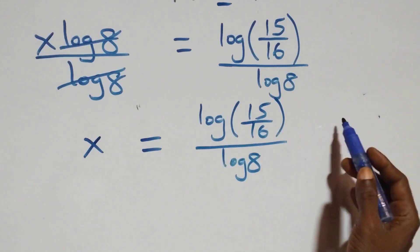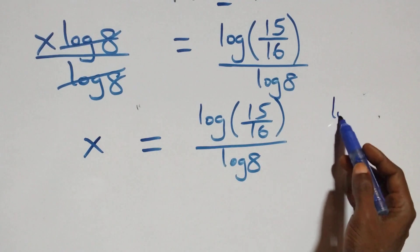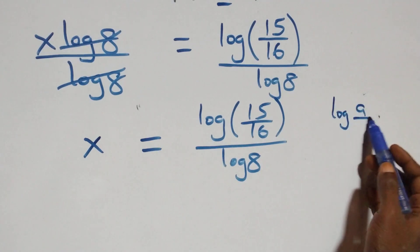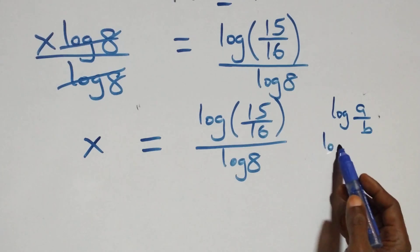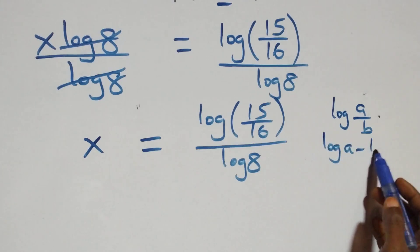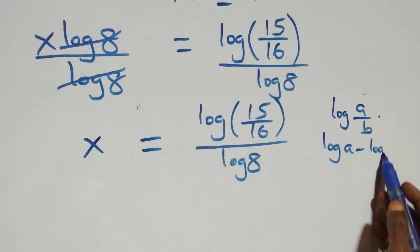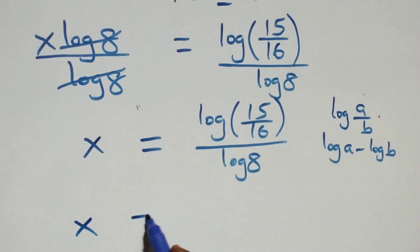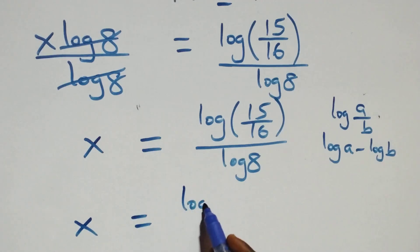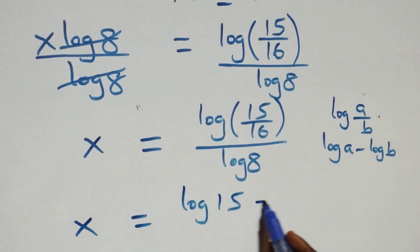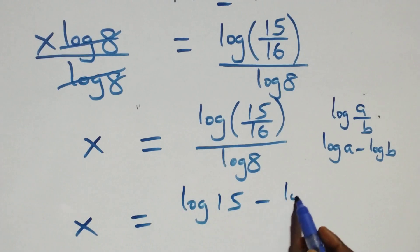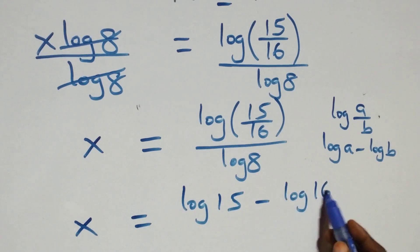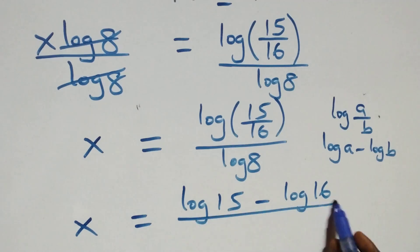This follows the law of logarithm: when we have log(a/b), this is the same thing as log a minus log b. So here, we have x equals to log 15 minus log 16, all over log 8.